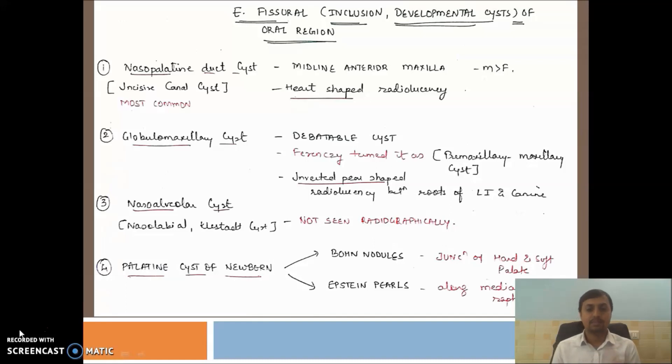The second cyst is the globulomaxillary cyst. It is a debatable cyst. Why debatable cyst? Because previously in the Shear classification, in the WHO classification under 92 and 93, it was included under the heading of cyst. But in the recent WHO 2017 classification, it is deleted. I include it here because it was asked in examination many times. It is also known as premaxilla maxillary cyst, the developmental cyst. On radiography, it has an inverted pear-shaped appearance. Located between the lateral incisor and canine.